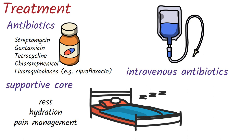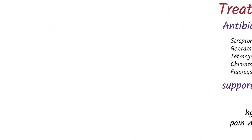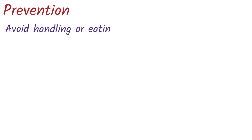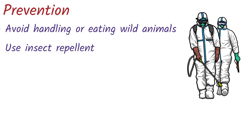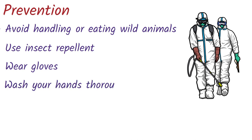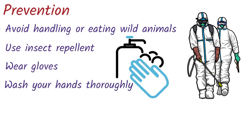If Tularemia is not treated, it can lead to serious and potentially fatal complications. Preventing Tularemia involves avoiding exposure to the bacterium Francisella tularensis and taking measures to reduce the risk of infection. Avoid handling or eating wild animals, especially rabbits and hares. Use insect repellent and take steps to avoid tick and mosquito bites, especially in areas where Tularemia is common. Wear gloves and other protective clothing when handling dead animals or performing activities that may generate dust or aerosols, like mowing lawns or cutting wood. Wash your hands thoroughly with soap and water after handling animals or after being in areas where the bacterium is present.